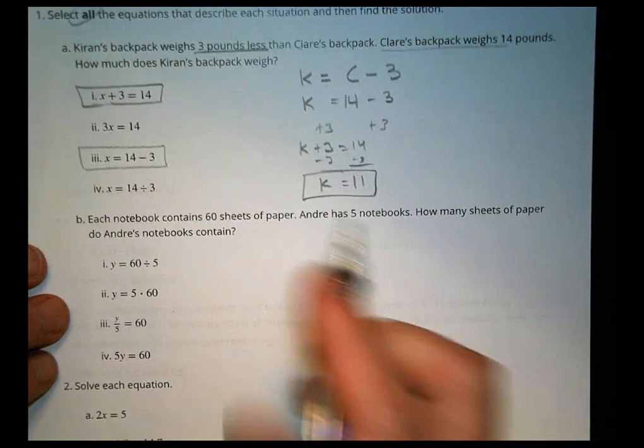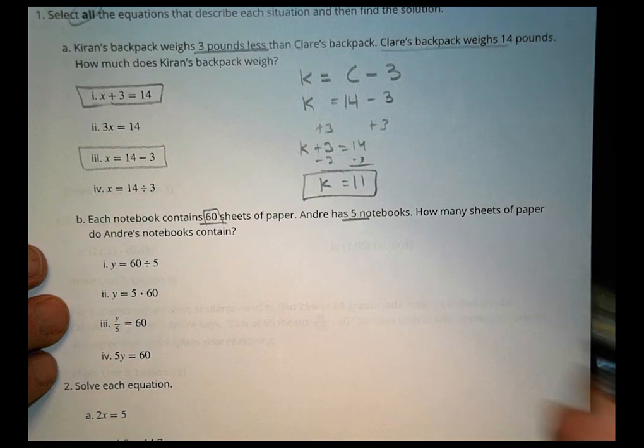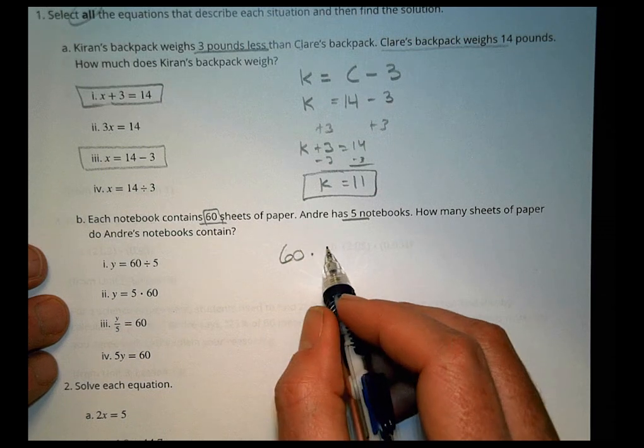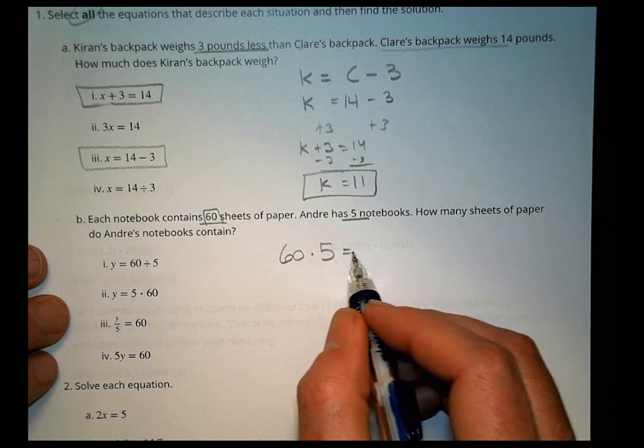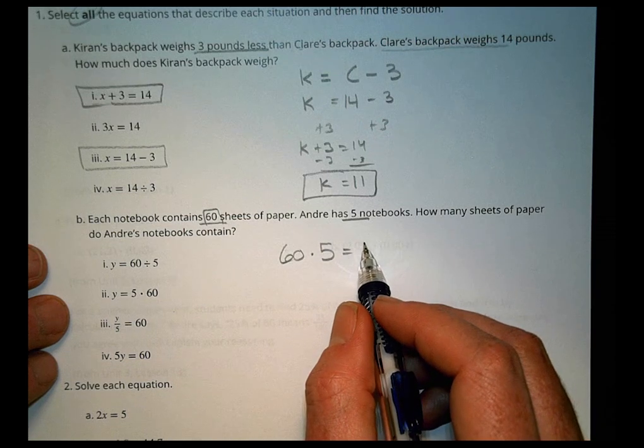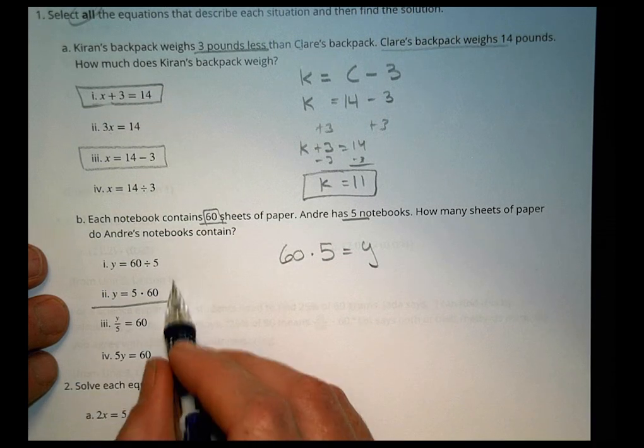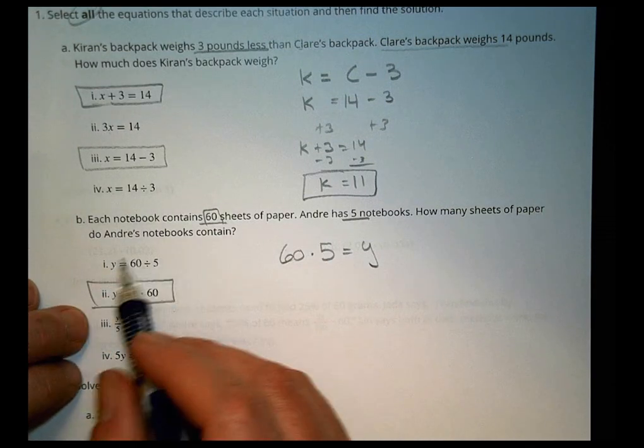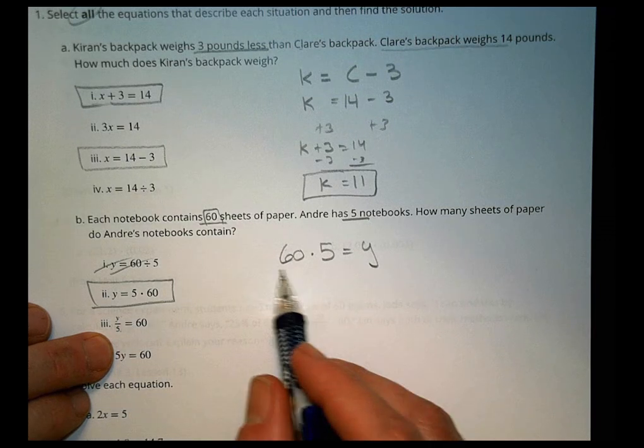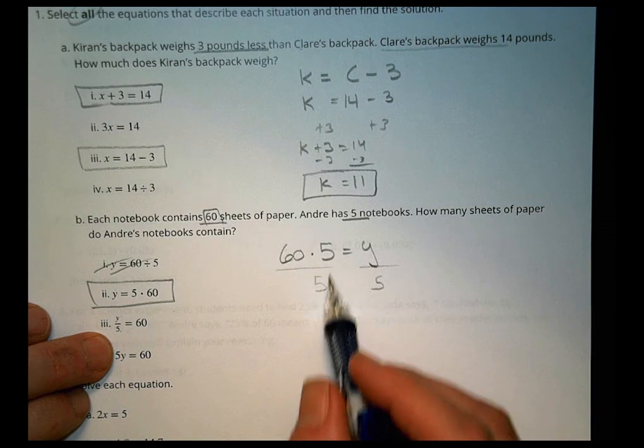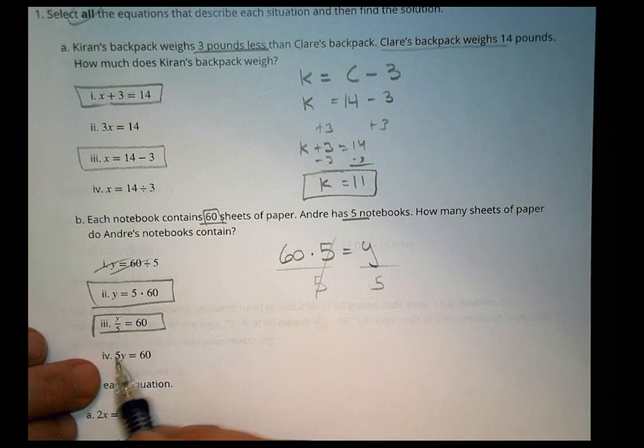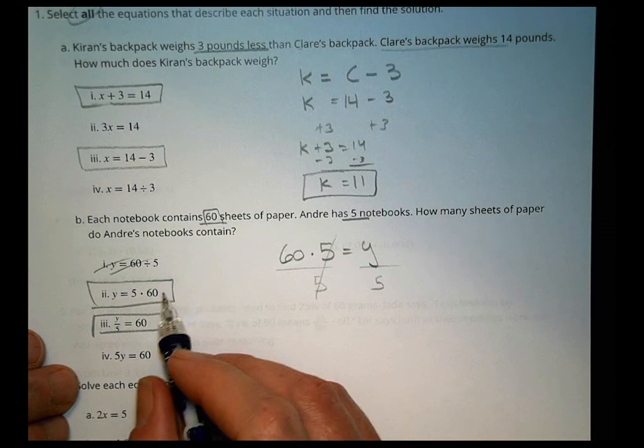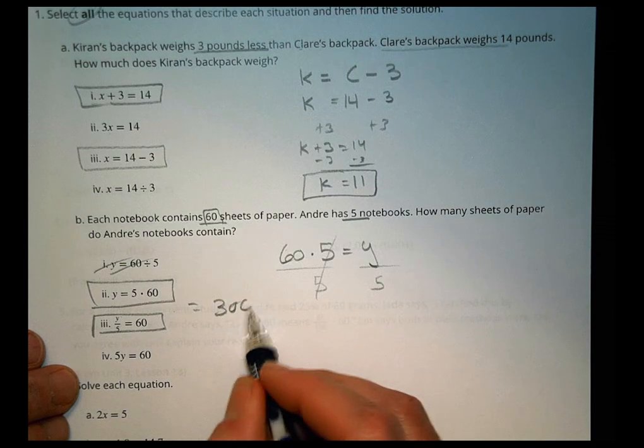For B, does each notebook contain 60 sheets of paper? Andre has five notebooks. So we have 60 sheets of paper and five notebooks. How many does he have? Well, 60 times five, which is going to be right here, right there. Okay. Let's see this one. 60 divided by five. That's not going to be possible. So we'd say no to that. Can I get Y divided by five? Sure. If I divide both sides by five, I end up with Y over five equals 60. That would work. Can I get five times Y equals 60? No. I can only divide it. So those two are the best ones. So what is five times 60? That's going to be equal to 300.